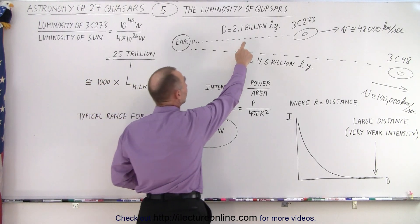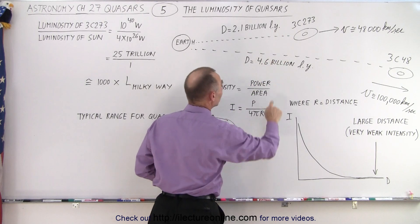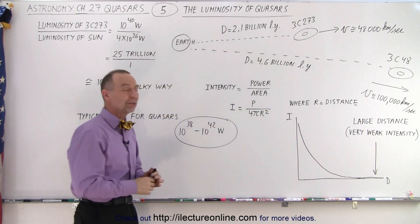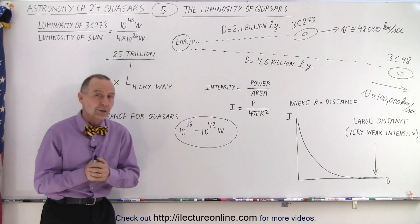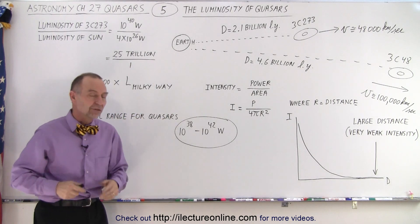Remember, about 2.1 billion light years for 3C273 and about 4.6 billion light years for 3C48. And they're moving at enormous velocities.